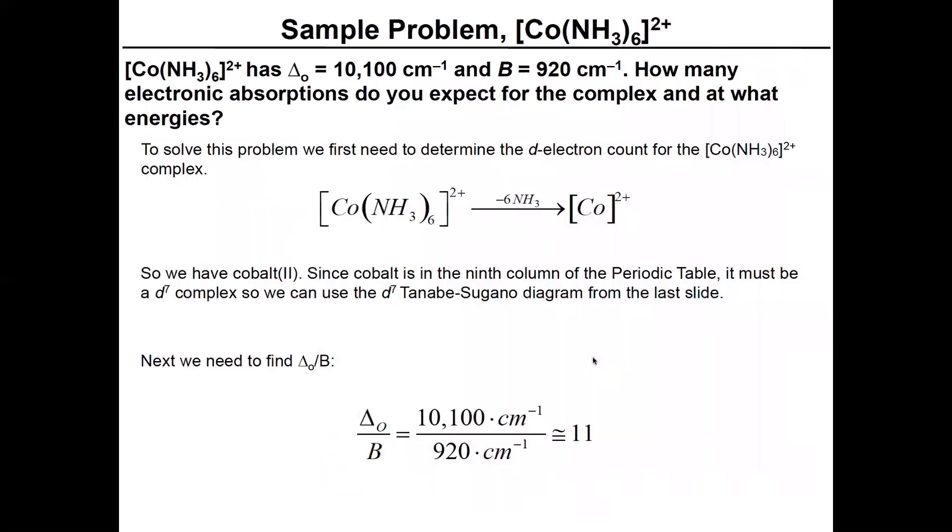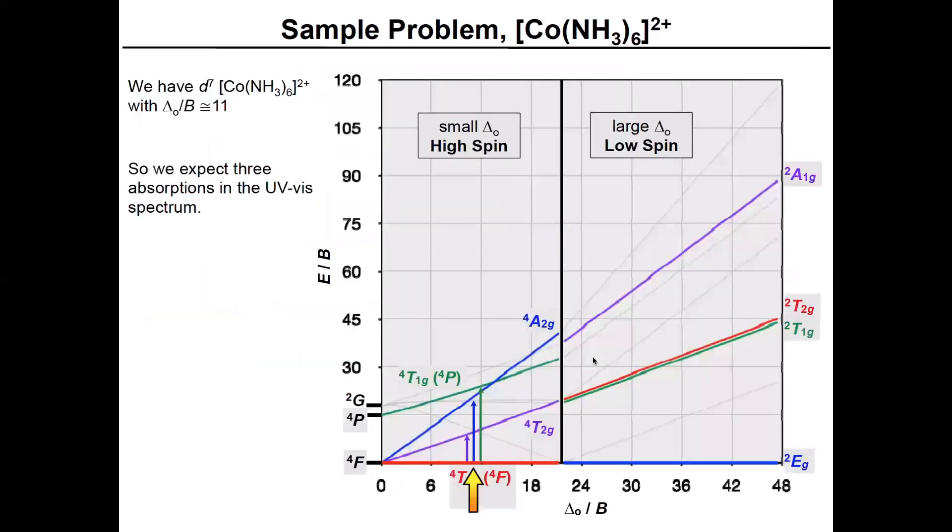But let's go to the example I have. So if we do this a little differently, and I tell you that ΔO is known for cobalt hexamine and it has a Racah parameter of 920, you can actually ask how many electronic absorptions would you expect for this complex and at what energies. And this is really pretty straightforward. But remember cobalt 2+ is going to be D⁷. So we're going to use this Tanabe-Sugano diagram. But this is a little easier because ΔO over B is actually going to be 11 in this particular case. So we sort of know already that that's the x-axis extrapolation point.